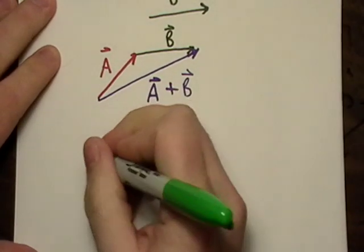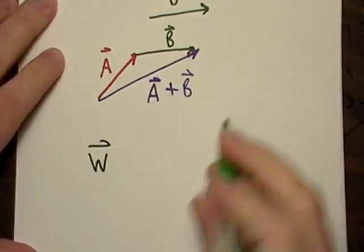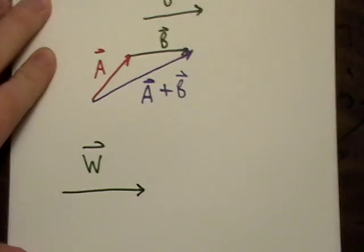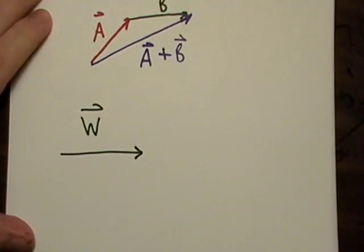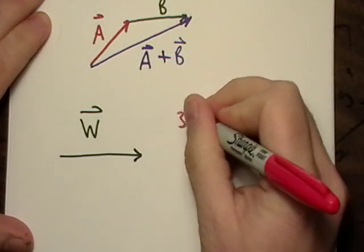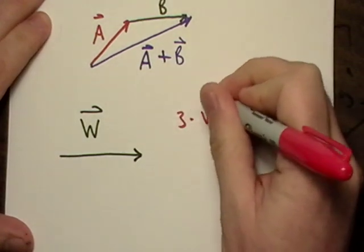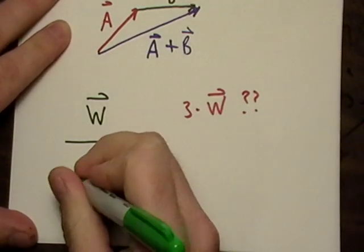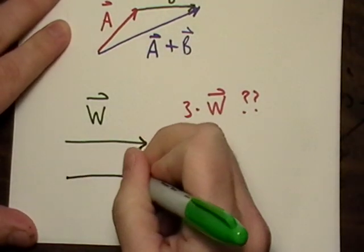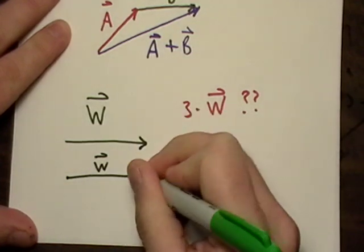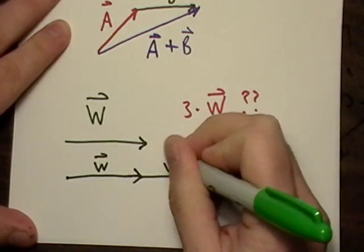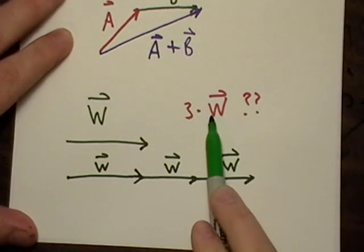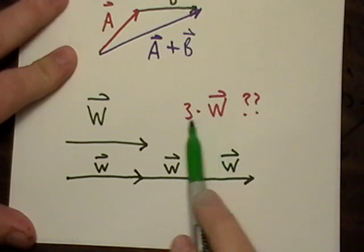The next thing I want to show you is say I have vector W, and this is what vector W looks like right here. What would three times vector W look like? Here's what it would look like: vector W, vector W, vector W. It would be vector W just three times as long.